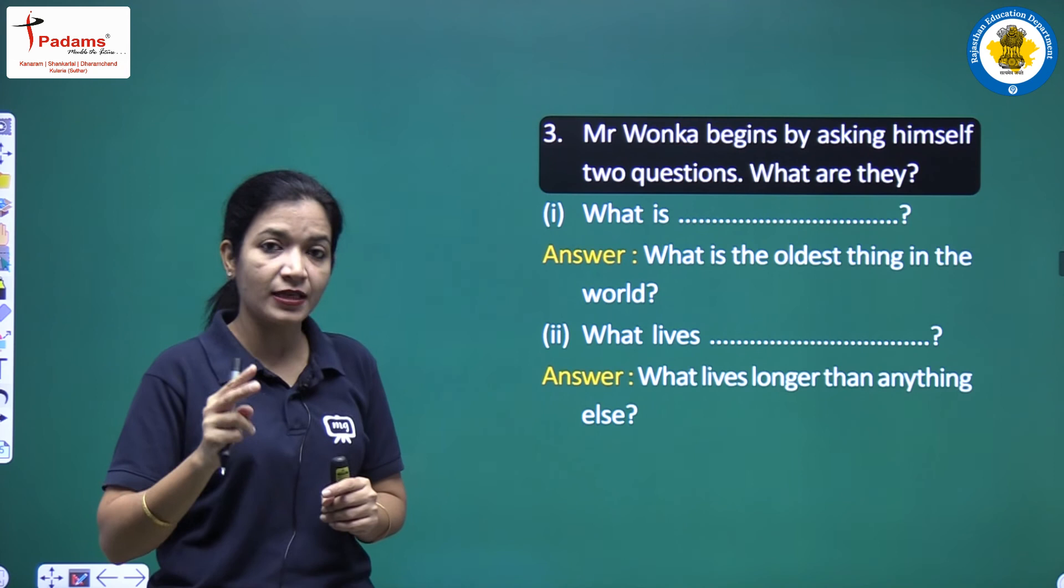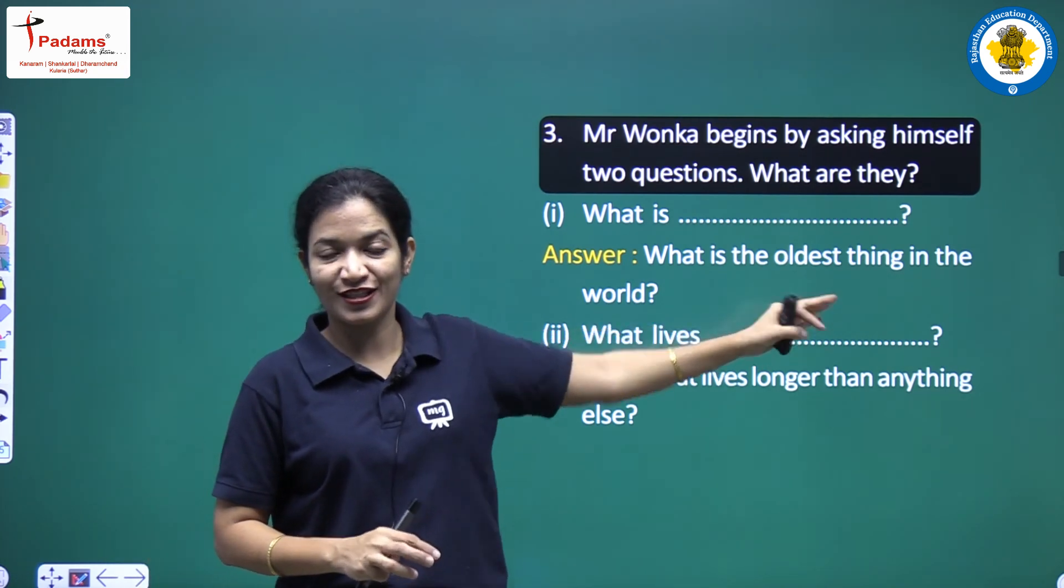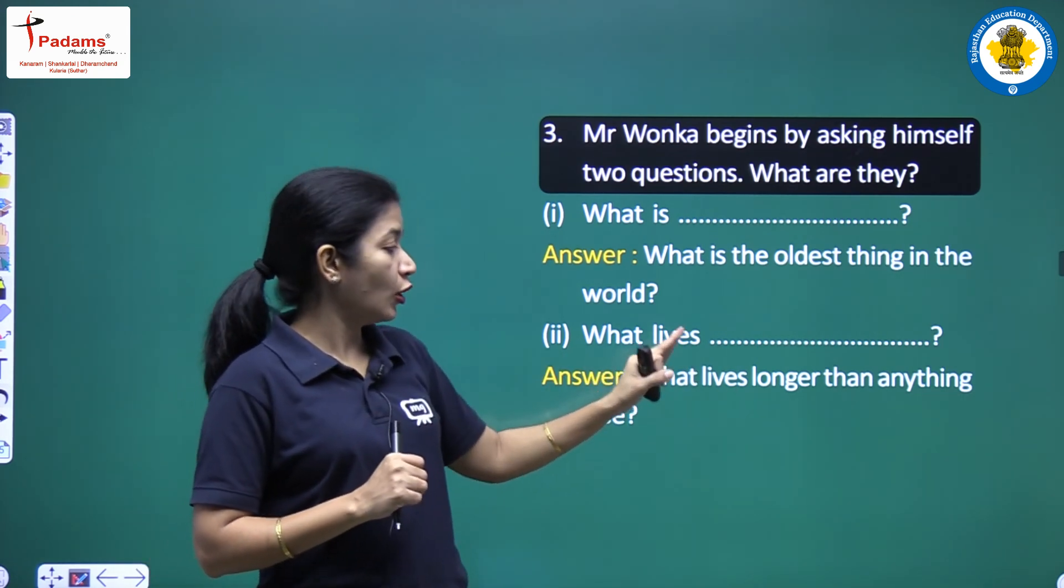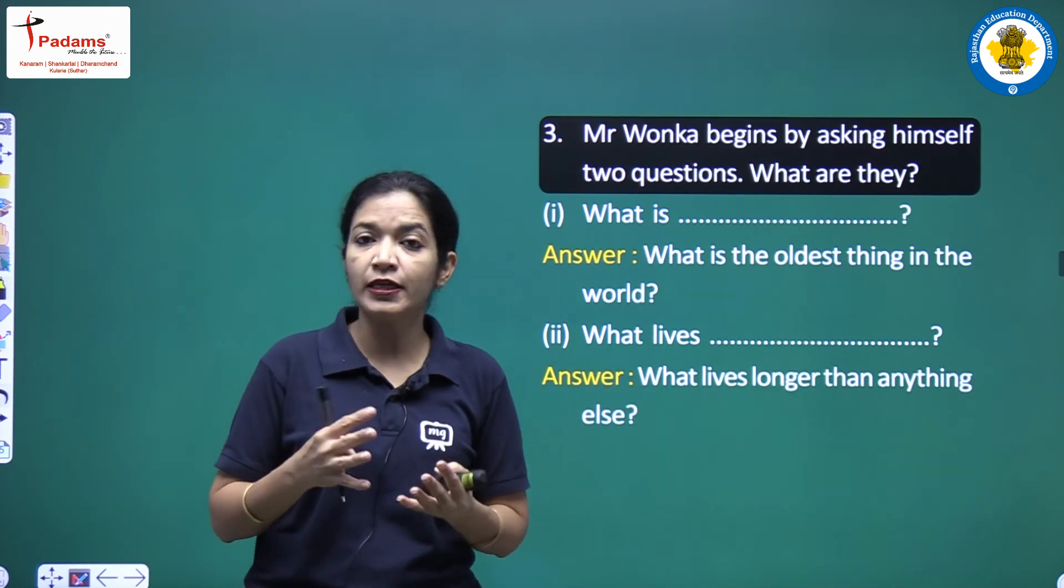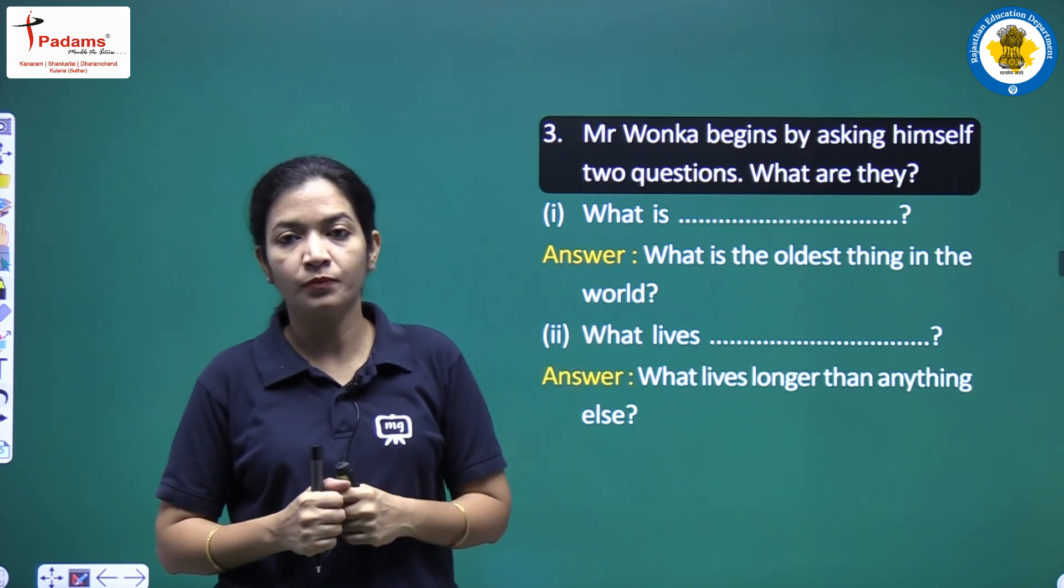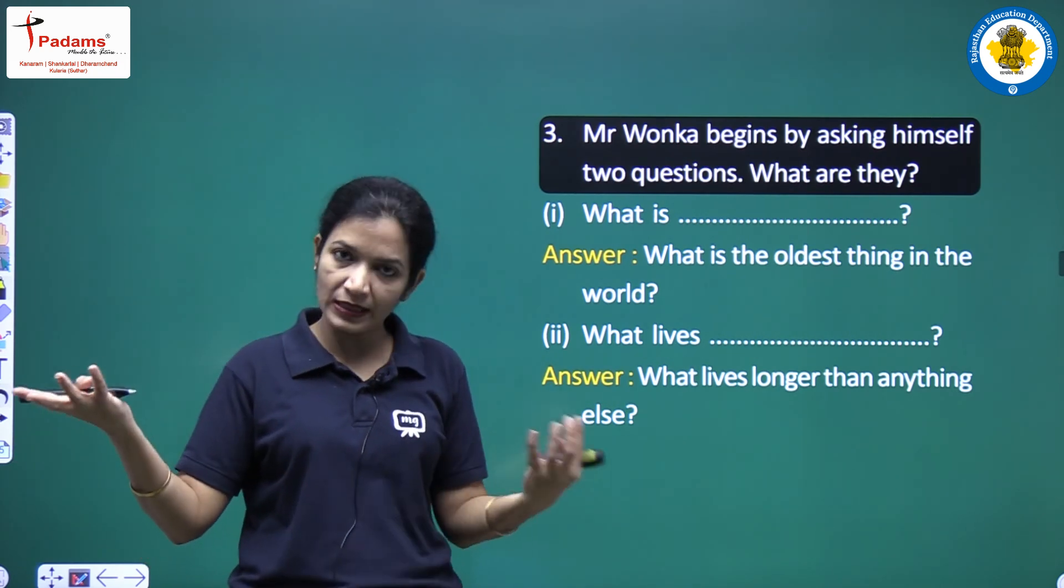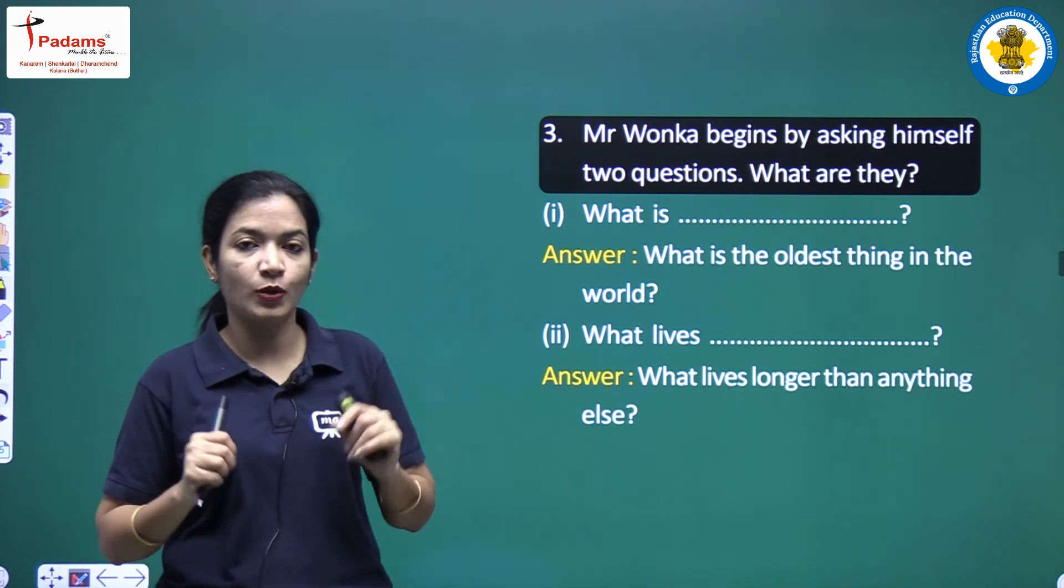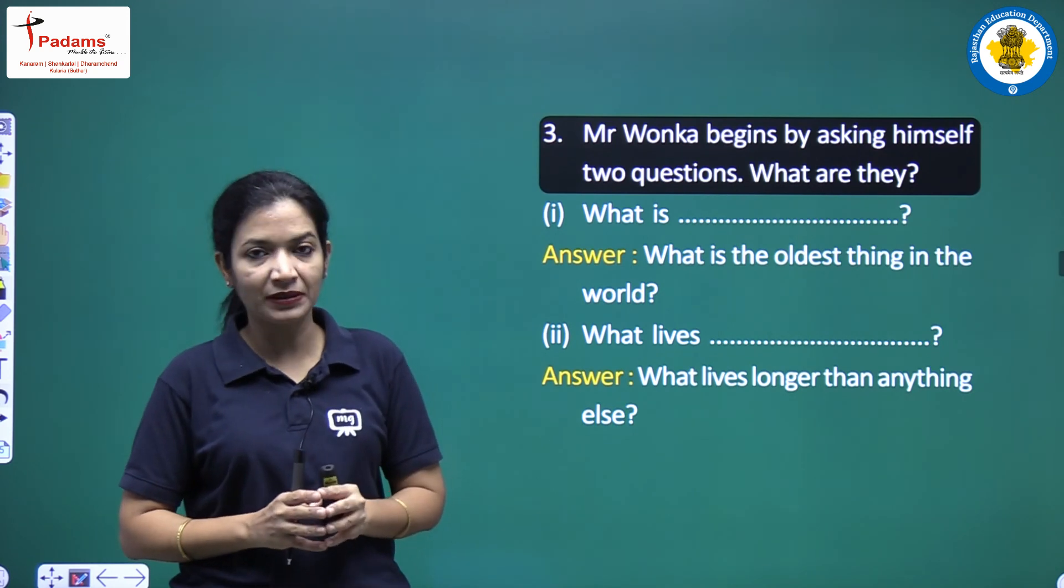Then the second question which he was asking himself was: What lives longer than anything else? What is the thing in this world that lives more years than anything else? It means older - the more age it has, the longer it will live. So these are the questions which he was asking himself.